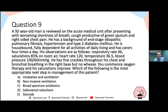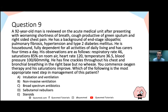Question nine — the final question: A 92-year-old man on the acute medical unit presents with worsening shortness of breath, cough productive of green sputum, and right-sided chest pain. He has end-stage idiopathic pulmonary fibrosis, hypertension, and type 2 diabetes. He is housebound, fully dependent for all activities of daily living, and has carers four times a day. Observations: respiratory rate 46, saturations 85% on room air, heart rate 120, temperature 36.5, BP 100/60. He has fine crackles throughout his chest and bronchial breathing at the right base. You commence oxygen therapy and saturations improve. Which is the most appropriate next step?